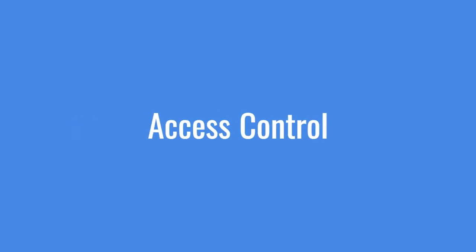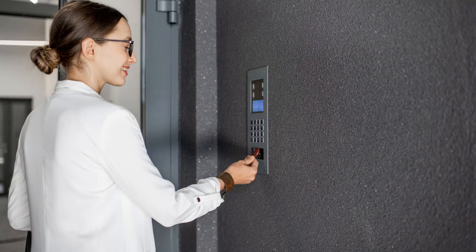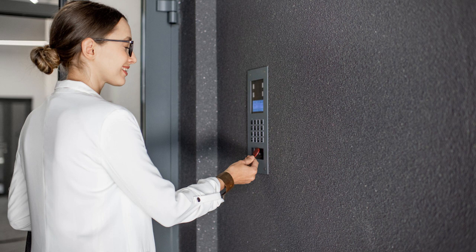Access control mechanisms enforce policies that dictate what resources users or systems can access and what actions they can perform. This includes Discretionary Access Control, which assigns access permissions based on the discretion of the resource owner, and Mandatory Access Control, which assigns access permissions based on security levels and predefined policies.